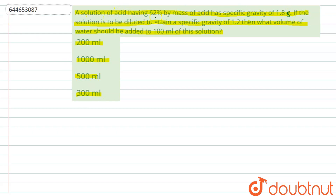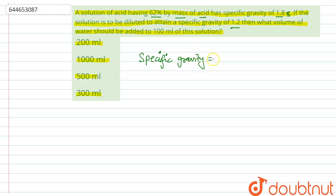We are given a solution of acid which has 62 percent by mass of acid and the specific gravity is 1.8. We have to find what volume of water should be added to 100 ml of the solution so that it attains a specific gravity of 1.2.